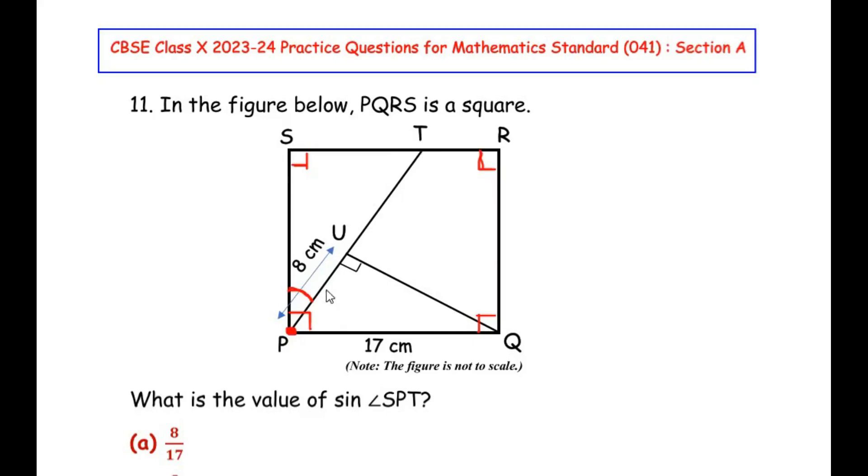So let us write over here angle SPQ, that is the total angle, is written as the sum of angle SPT plus angle TPQ. But this total angle SPQ is 90 degrees because this is one of the angles of the square. So 90 degrees is equal to angle SPT plus angle TPQ.